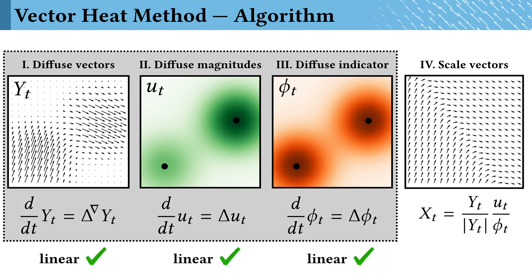These first three steps are all linear. This means that fast and effective linear solvers can do the computational heavy lifting, and the last step is just some local arithmetic.